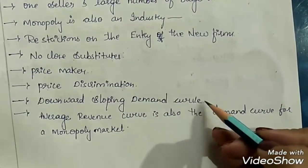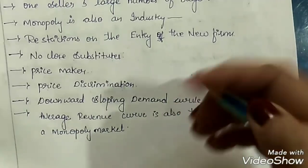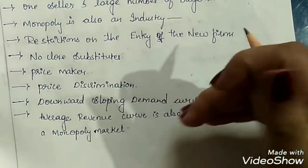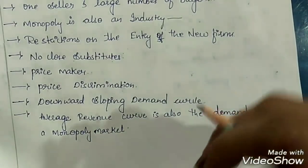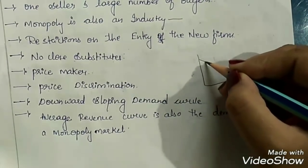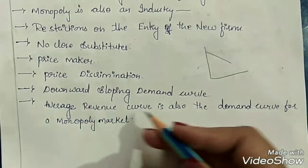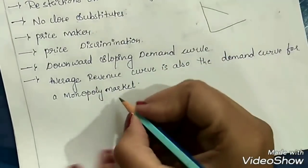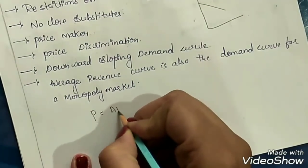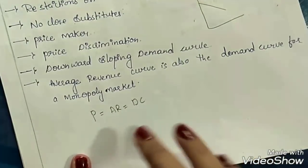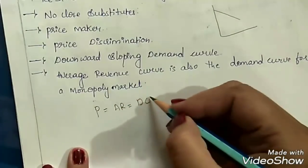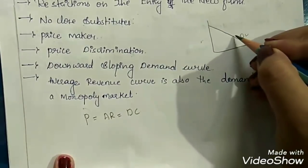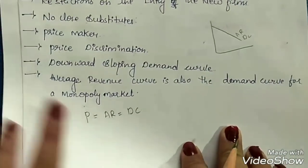Next, downward sloping demand curve. In perfect competition market, we had a demand curve which is a horizontal straight line. But here, the demand curve is downward sloping. As the price of the commodity increases, the demand goes on decreasing — hence it is a downward sloping demand curve. Next, the average revenue curve is also the demand curve for a monopoly market. This is a very important point. Here, price is equal to average revenue, which is also called the demand curve. So price, average revenue, and demand curve are all the same in this type of market.